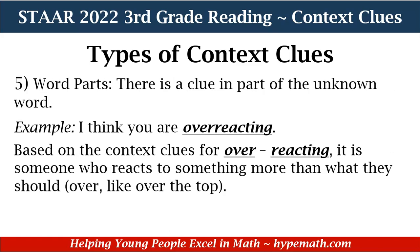Our next type of context clues is word parts — there's a clue in part of the unknown word. We can break up the word to see if it has a prefix or suffix that can help us determine the meaning. In our sample sentence: 'I think you are overreacting.' In overreacting, we have 'over' as our prefix and 'reacting' as our base word. So it means someone who reacts to something more than they should — they are over the top.